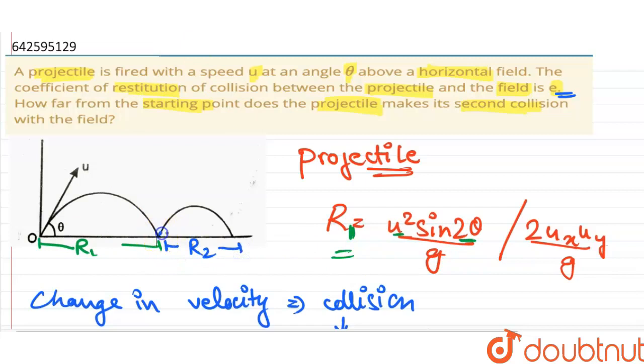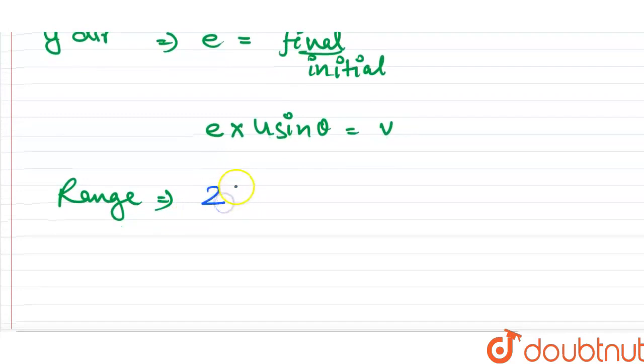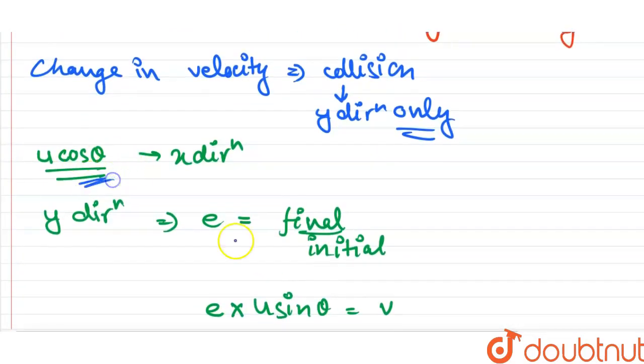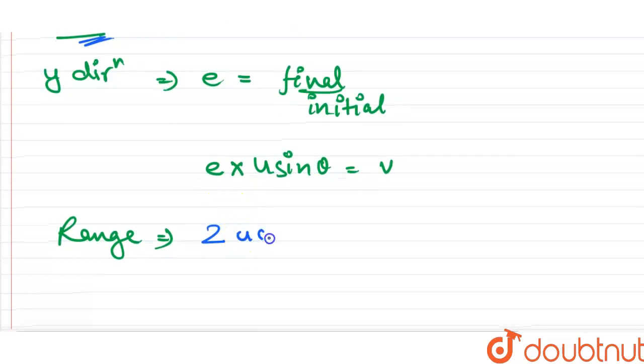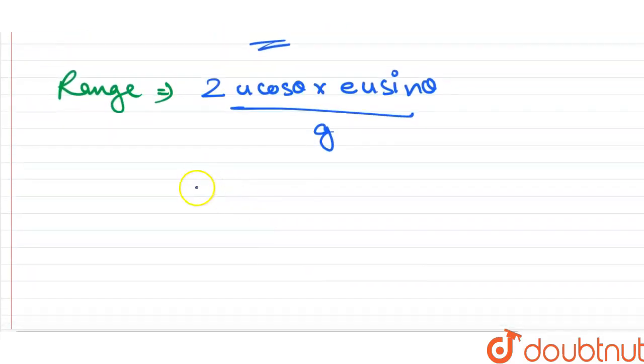Now for r2, velocity has changed. We will use this formula and we will get 2 u x. The velocity in x direction is same, u cos theta, into u y that is e u sin theta upon g. So this comes out to be u square e sin 2 theta upon g. So this is what r2 is.